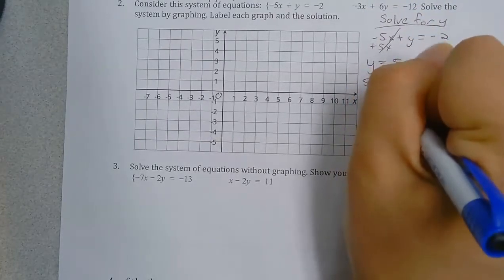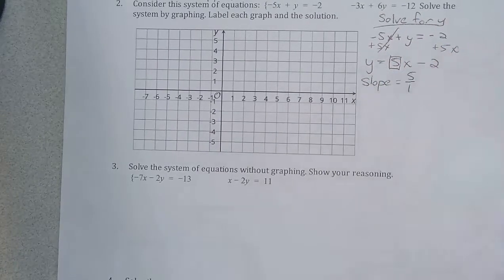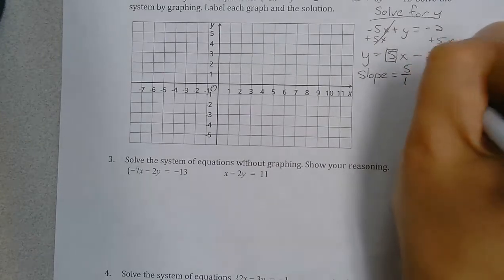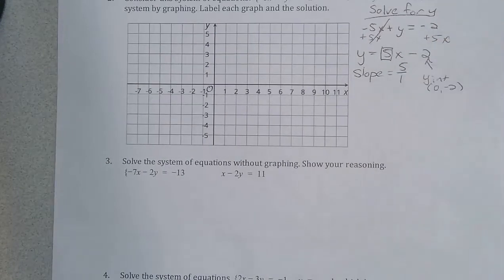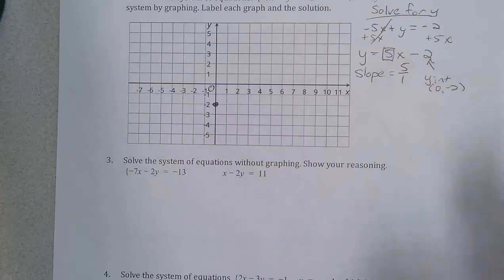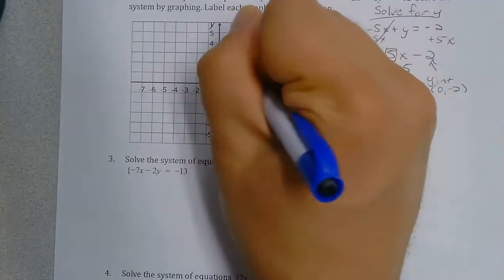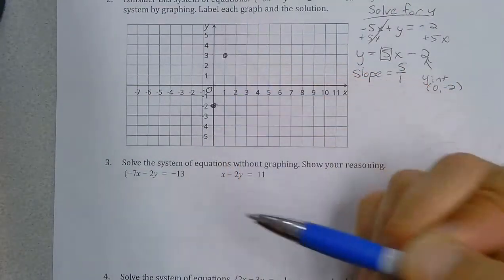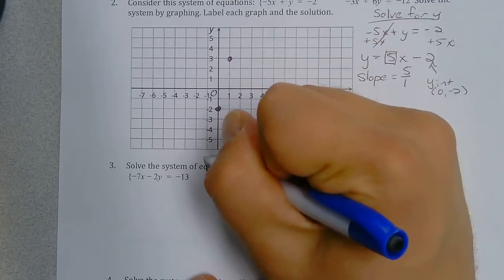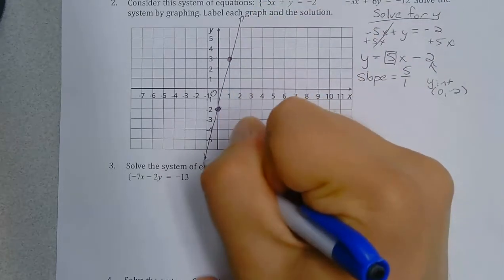So my slope is 5, which means I go up 5 over 1. My Y-intercept is (0, −2), so I go to 0 on the X-axis, down to negative 2 — there's my Y-intercept. Then for the slope, I go up 5: count up 1, 2, 3, 4, 5, then over 1. This line looks like that.